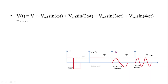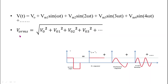Here, V₀ is the DC component, Vm1·sin(ωt) is the fundamental component, Vm2·sin(2ωt) is the second harmonic, and Vm3·sin(3ωt) is the third harmonic. Only the fundamental component Vm1·sin(ωt) is desirable. We can calculate the RMS value of the output voltage by squaring and adding the individual RMS values of each component, then taking the square root of the whole expression. This gives the RMS value of the inverter output voltage.